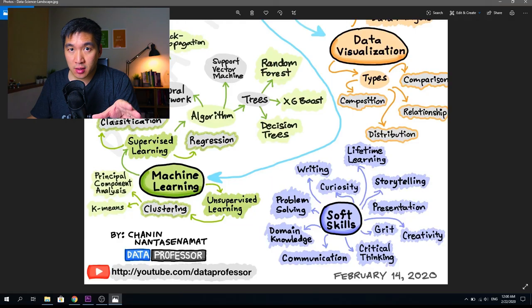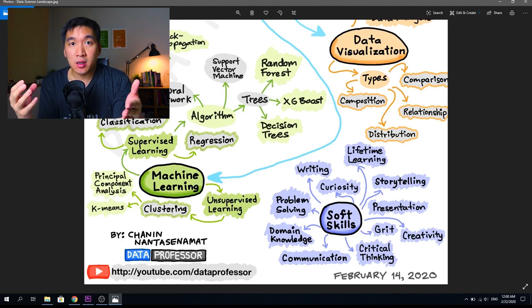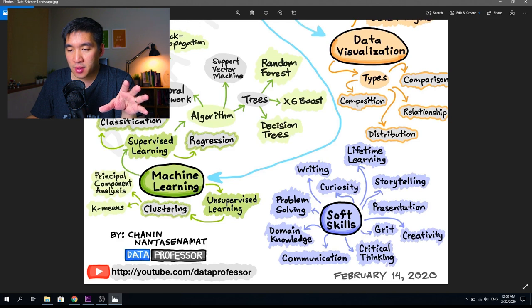Another important concept is data visualization. Data visualization is essentially the creation of graphical plots to visualize the distribution of data points, as well as the composition of the data and the relationship between variables and between data points. Each of these subtypes—comparison, relationship, distribution, composition—will be sub-branched into different types of plots.